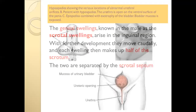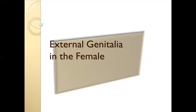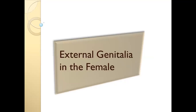Incomplete fusion of the urethral folds causes hypospadias, which is an abnormal condition requiring surgical correction. The opening is located ventrally — this is hypospadias. Bladder exstrophy is another congenital anomaly, meaning the bladder mucosa is exposed. This is a serious congenital anomaly.